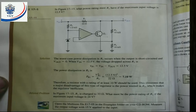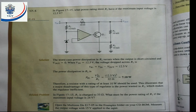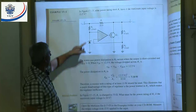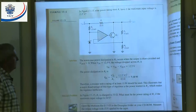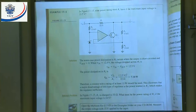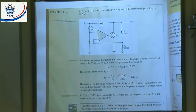Example 17.5: In figure 17.15, what power rating must R1 have if the maximum input voltage is 12.5 volts? Assuming V_out = 0 (short circuit on output), V_R1 = V_in − V_out = 12.5 volts. Working out the power dissipation gives 7.1 watts. The standard wattage value used would be a 10-watt resistor.